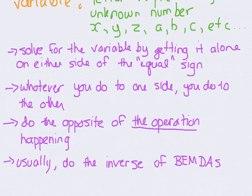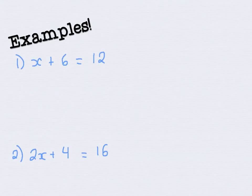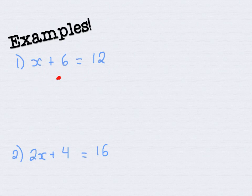Now that I've explained everything, let's do some examples. My first example is the one I started this lesson with. We want our x to be all by itself. To do that, we've got this 6 that's blocking our x from being alone. Remembering what we said about doing the opposite of the operation that is going on — addition is happening here — so we're going to do the opposite of addition and subtract 6, and subtract 6 on both sides.